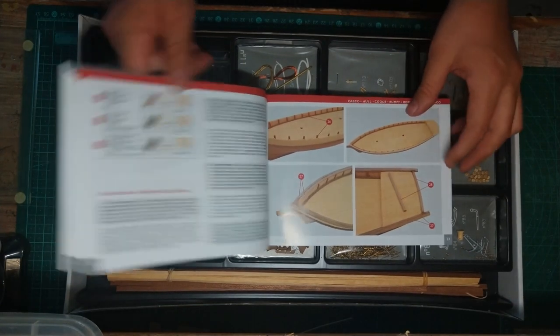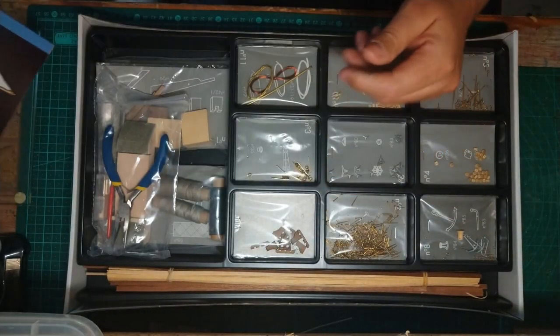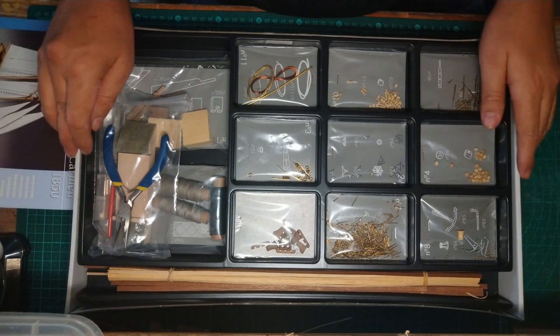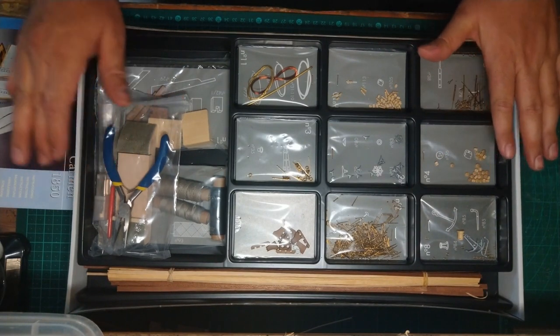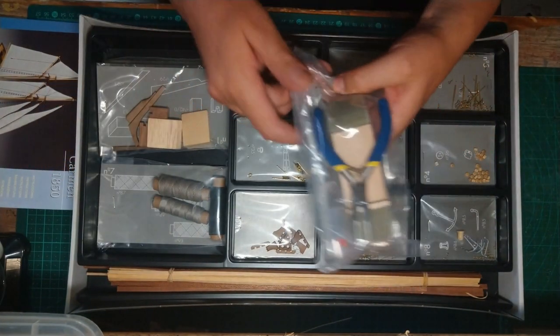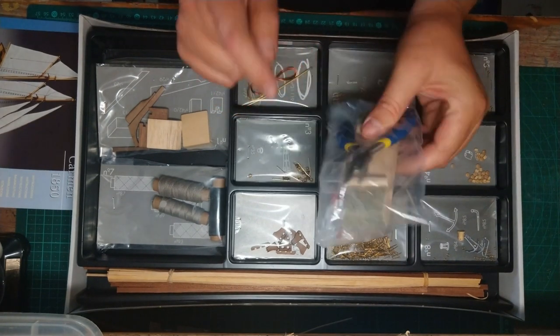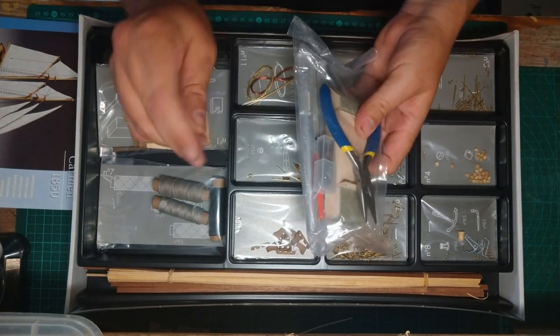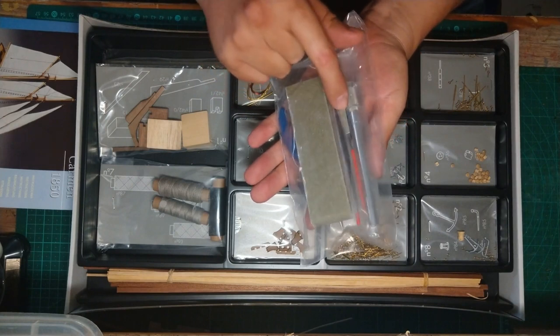When we get it open, you can see this is all the tools that they send us. So this is like a little sanding paper. That's the little block that they send us. I think that's just to file down. There's all the tools that we get along with this model, which I'm quite stoked about.